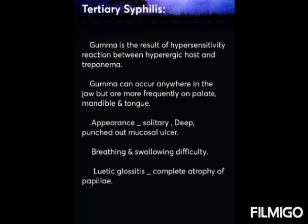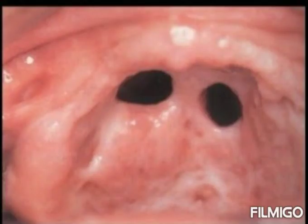Leutic glossitis involves complete atrophy of the papillae. In tertiary syphilis, neurosyphilis and tabes dorsalis may also appear. Tabes dorsalis: the patient loses position sense of the lower extremities and walks with a slapping step. Cardiovascular syphilis also occurs. These are examples of punched-out lesions present on the palate in tertiary syphilis.